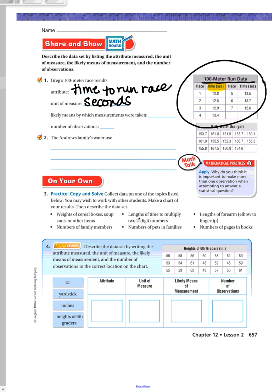Likely means by which measurements were taken. So think about how you measure time. Well, we know that you usually use a stopwatch, especially if you're measuring seconds. Number of observations: one, two, three, four, five, six, seven. Seven is the amount of times that they observed his running time.